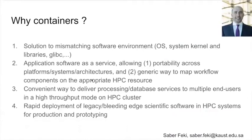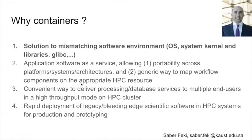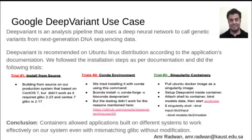Next, we'll be highlighting four different use cases of containers on those platforms. The first use case is a common one across several HPC centers, where containers enable the support team to deploy applications even when there is a mismatch in the OS or the GCC version. One example is DeepVariant, which is a bioinformatics pipeline that uses a deep neural network for genetic variant calling.